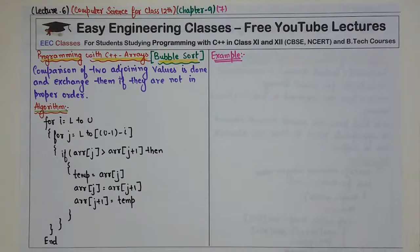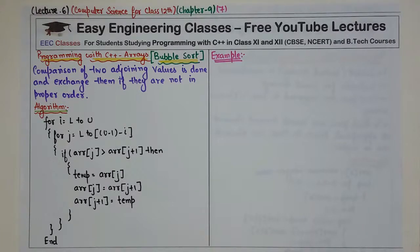Bubble sort is one of the most simple sorting techniques. We will compare two adjoining values and if they are not in proper order then we will simply exchange them. So, two adjoining values are compared and if they are not in the correct position then we will exchange them.